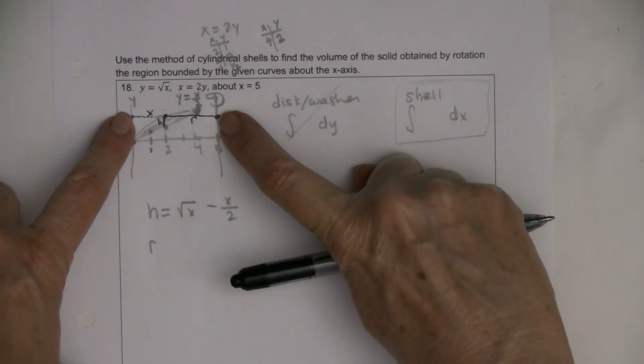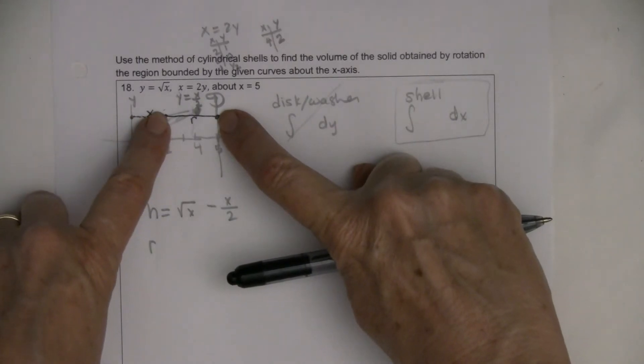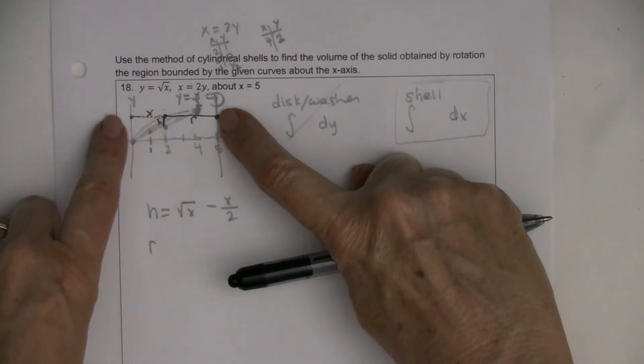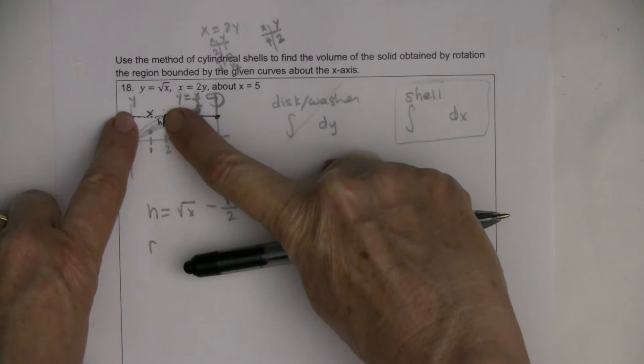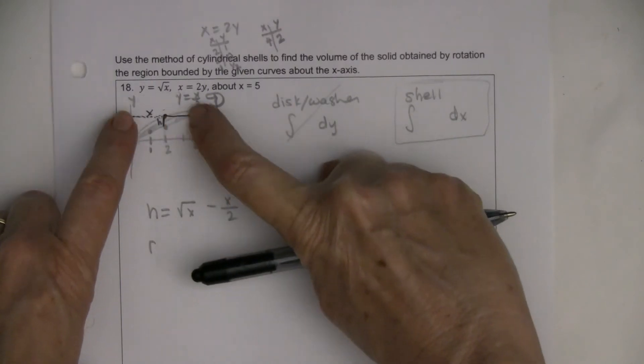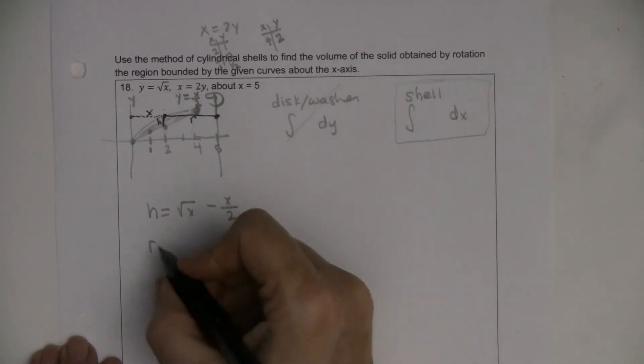But I'll still be able to find what r is in terms of x. I know this whole thing is 5, so from the y-axis to the axis of rotation is 5, a distance of 5. And I just want to know that little distance r right there. So if the whole thing is 5 and this distance right here is called x, then r must be 5 take away x.